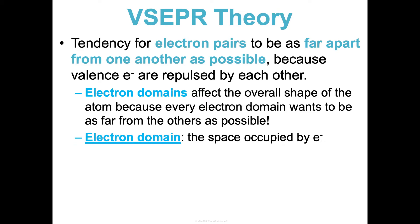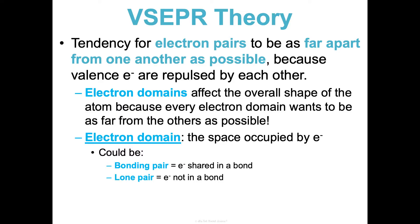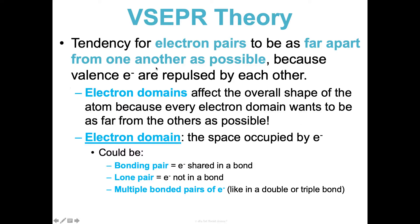So what is an electron domain? It's the space occupied by electrons. A couple of things qualify as a domain: a bonding pair — electrons shared in a single bond — a lone pair, electrons not in a bond, or multiple bonded pairs of electrons such as in a double or triple bond. A double bond is just one electron domain, and a triple bond is also one electron domain. So single, double, and triple bonds are all treated the same as just one electron domain.